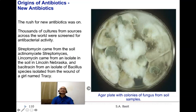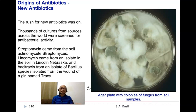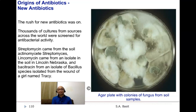After the discovery of Alexander Fleming, the rush for new antibiotics was on. Thousands of cultures from sources across the world were screened for antibacterial activity. One antibiotic discovered in the Philippines is erythromycin, discovered in Iloilo — that is why the first commercial name of erythromycin was Iloilo. Streptomycin came from Actinomycetes streptomyces. Lincomycin was isolated from soil in Lincoln, Nebraska, and bacitracin came from a Bacillus species isolated from the wound of a girl named Tracy.